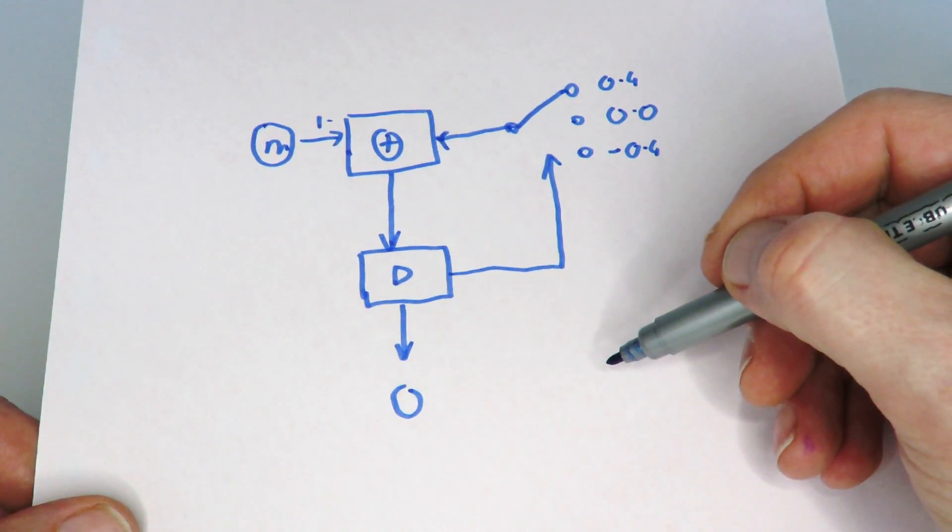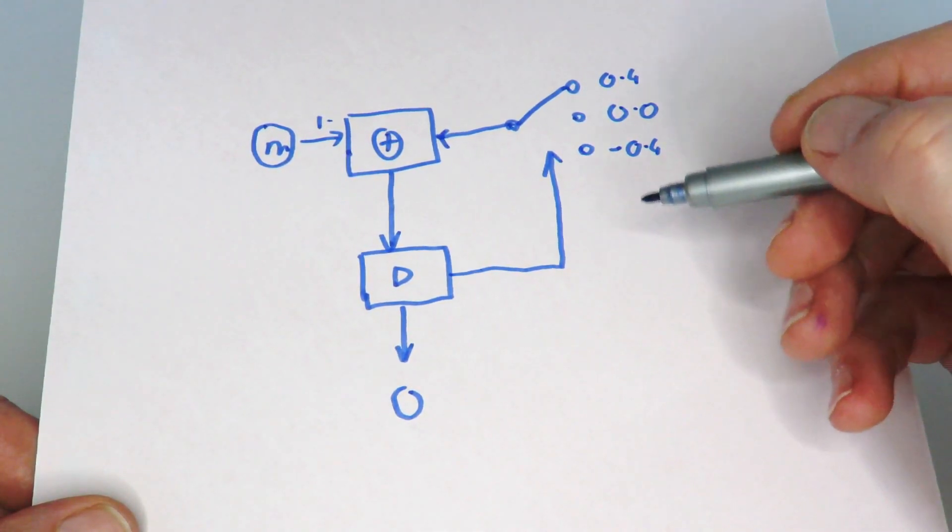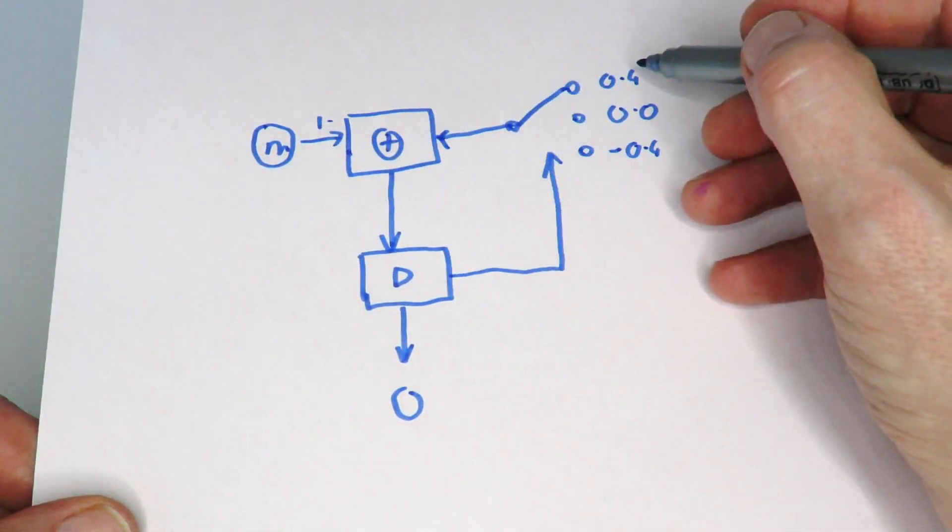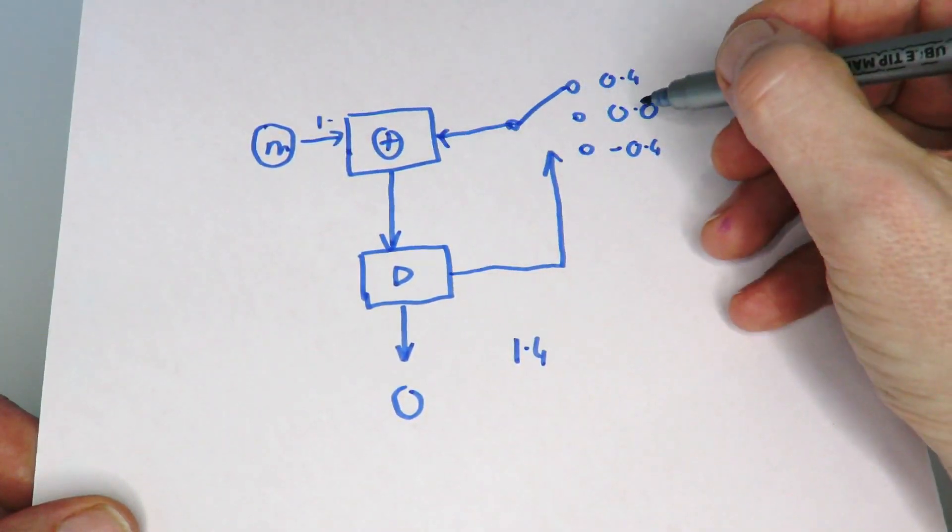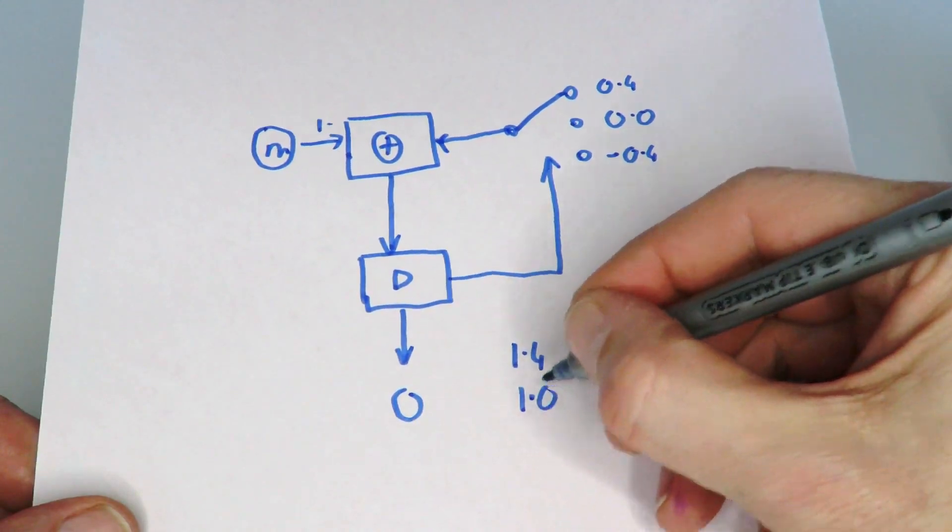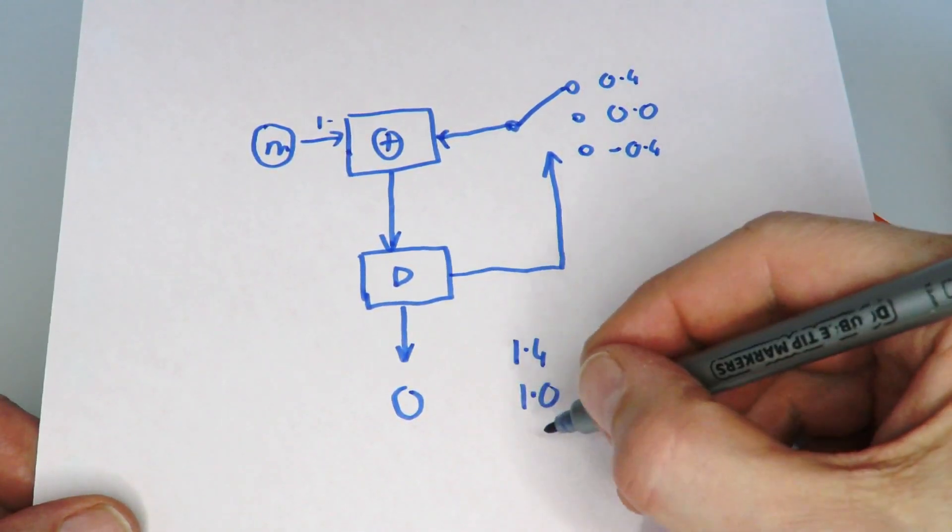To give us the overall three possible output speeds. So the possible output speeds would be one plus 0.4, so it would be 1.4. One plus zero gives us one, and then one minus 0.4 is 0.6.